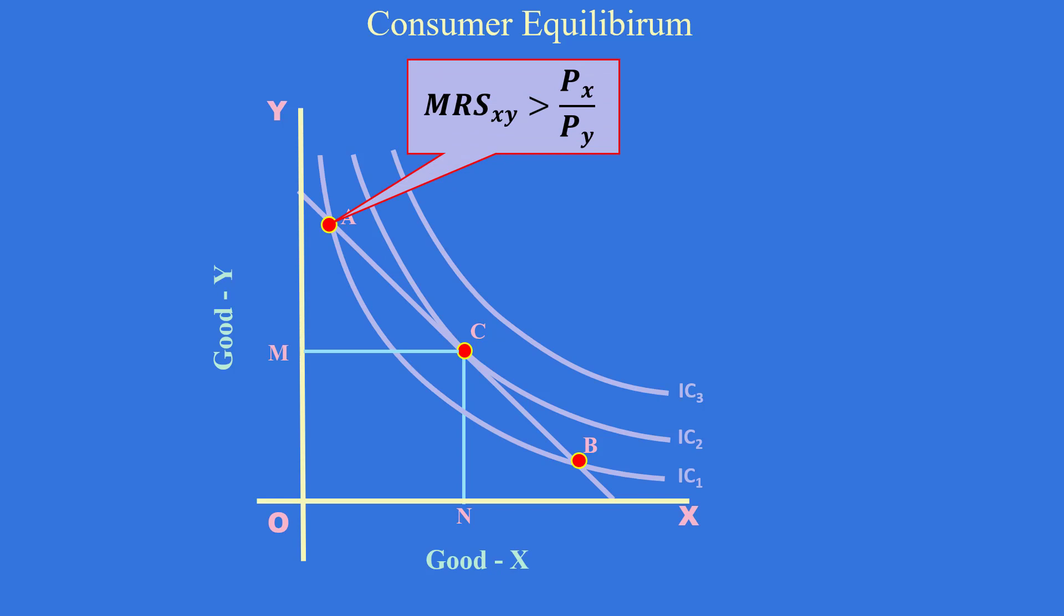At point A, marginal rate of substitution of X for Y is greater than price ratio. He will substitute good X for good Y and reach the point C.